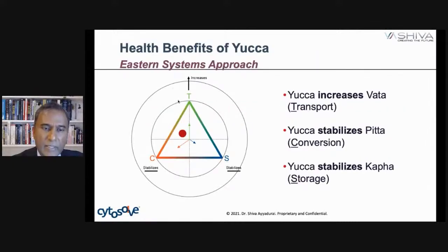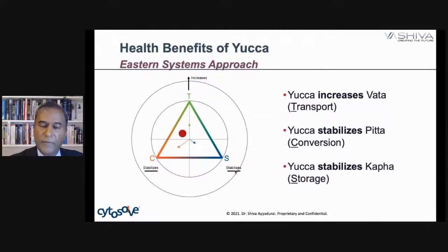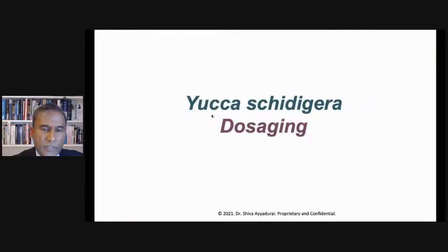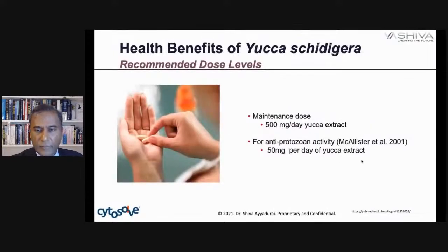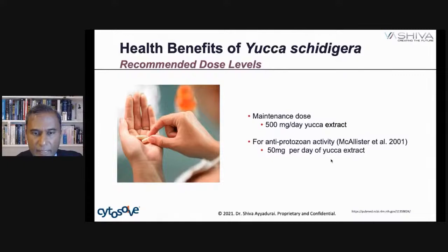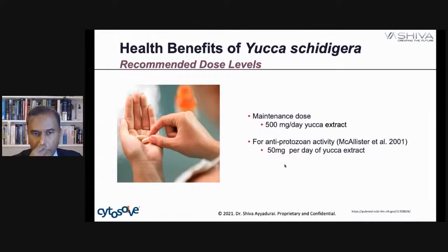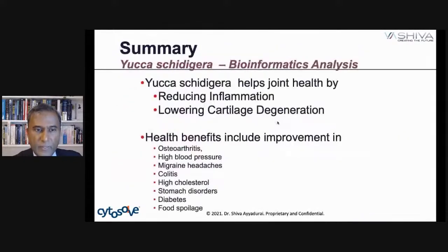Yucca increases transport, which means motion. It stabilizes pitta, which supports digestion, and stabilizes kapha, which helps prevent weight gain — but it really supports motion. That's from the Eastern systems approach. As for dosing: the literature from Macalester in 2001 shows about 50 milligrams per day for anti-protozoal activity against worms, and a maintenance dose of around 500 milligrams per day for anti-inflammatory effects.